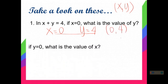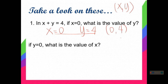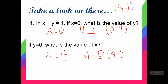Next, if your y is equal to 0, what is the value of x? So let's have y is equal to 0 — what is the value of your x? So your x here is 4. If we are going to make our ordered pair, this will become 4, 0.